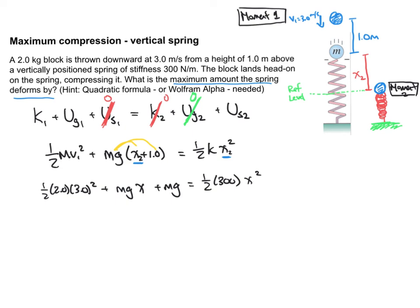Okay, so I'm going to do some more substituting numbers and evaluating some expressions. So half times 2 times 3 squared, that turns out to be 9. m times g, I'll go with 2 times 9.8x, plus m times g without an x, so 2 times 9.8. And then half times 300, I'll calculate that, that's 150.